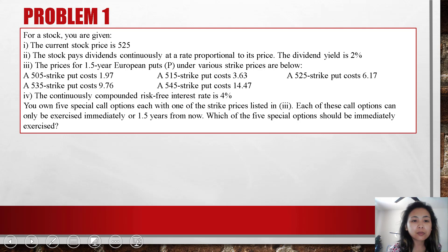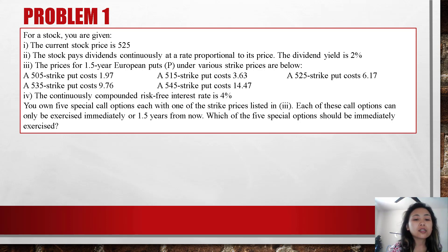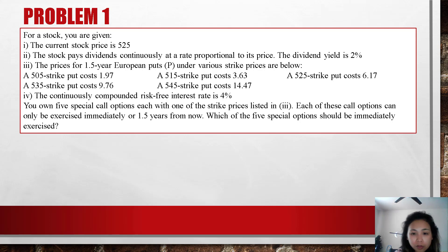You are given: the current stock price is $5.25. The stock pays dividends continuously at the rate proportional to its price; the dividend yield is 2%. The prices for 1.5-year European puts under various strike prices are: a 505-strike put costs $1.97, a 515-strike put costs $3.63, a 525-strike put costs $6.17, a 535-strike put costs $9.76, a 545-strike put costs $14.47. The continuously compounded risk-free interest rate is 4%. You own 5 special call options, each with one of the strike prices listed. Each option can only be exercised immediately or 1.5 years from now. Which of the 5 special options should be immediately exercised?